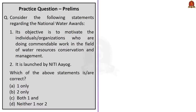Consider the following statements regarding the National Water Awards. Statement 1: its objective is to motivate individuals or organizations doing commendable work in the field of water resources conservation and management — this is correct. Statement 2: it is launched by NITI Aayog — this is incorrect because the National Water Awards were launched by the Jal Shakti Ministry. Therefore, the correct answer is option A: one only.